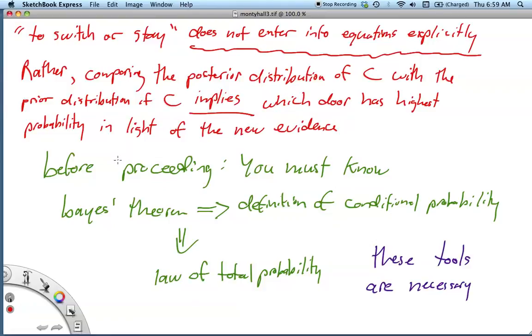So before proceeding there's a few things that you have to know. You have to know Bayes' theorem, which if you know Bayes' theorem and you see how it's constructed this means that you've got to understand conditional probability and also the law of total probability. So I have a video where I actually prove both of these things. So those would be really good things to check out and have in your toolkit before you try to think about this problem.